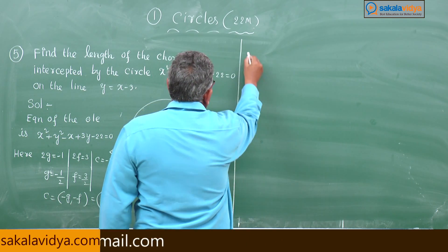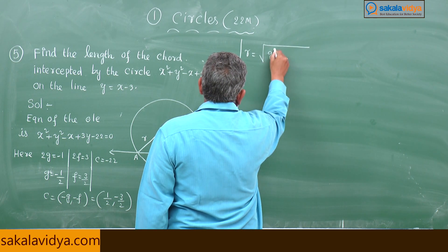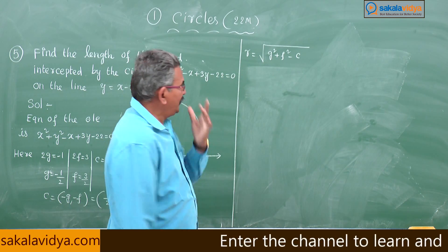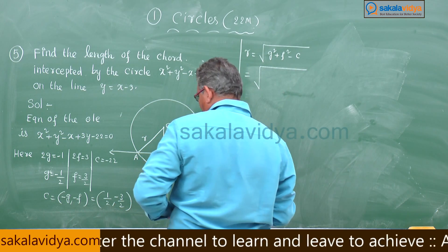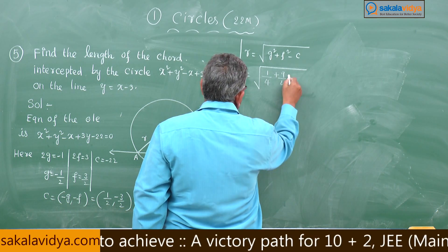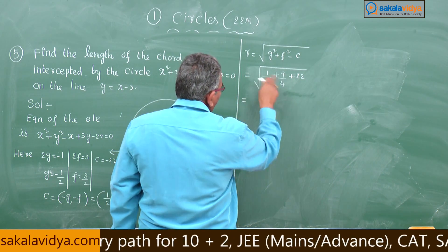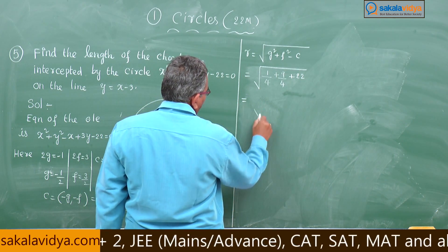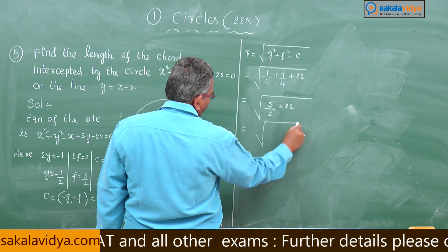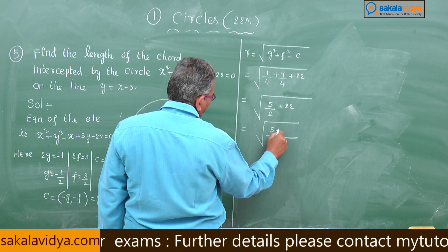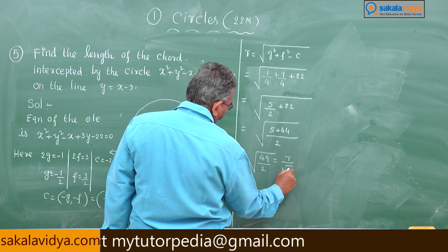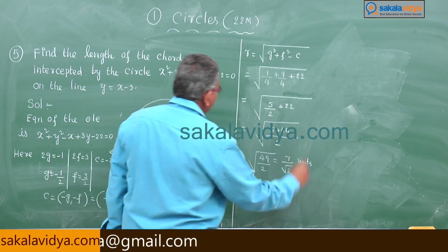The radius r = √(g² + f² - c) = √(1/4 + 9/4 + 22) = √(10/4 + 22) = √(5/2 + 22) = √(49/2) = 7/√2 units.